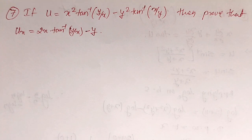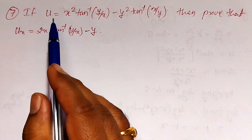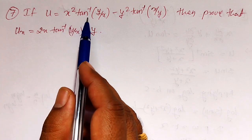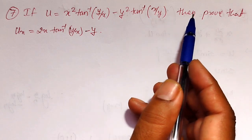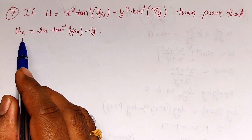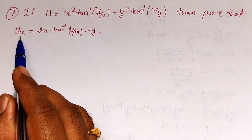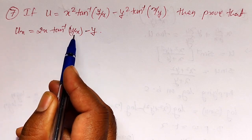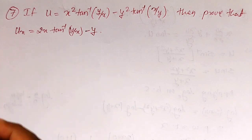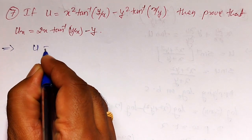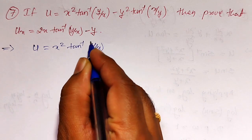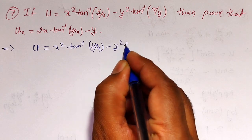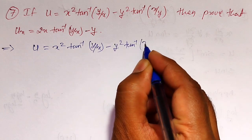I am going to solve an example on partial differentiation. That is, if u is a function of x and y as x square into tan inverse of y by x minus y square into tan inverse of x by y, then we have to prove that u_x, the partial derivative with respect to x, equals 2x into tan inverse of y by x minus y. Let me write: u equals x square into tan inverse of y divided by x, minus y square into tan inverse of x by y.